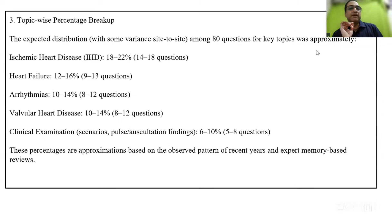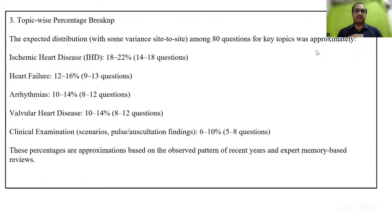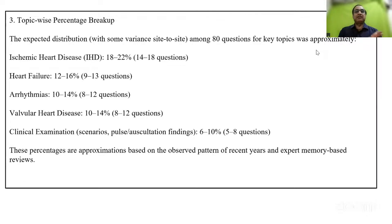Looking at the percentage and topic-wise breakup: students expected ischemic heart disease to hold around 20%, but it was on the lower side — fewer questions than anticipated. About 15% was expected for heart failure, but the heart failure questions were not core rote-memory based; some were on drug therapies and clinical framing. Valvular heart disease and arrhythmia followed similarly. Arrhythmia proportionately held its ground with four or five clinical examination questions. Overall, the four pillars — ischemic heart disease, heart failure, arrhythmia, and valvular — did not constitute more than 40%, as expected.